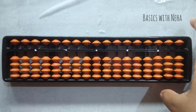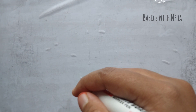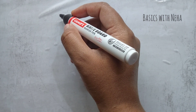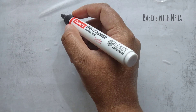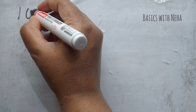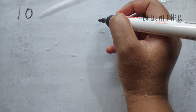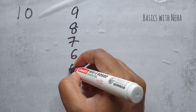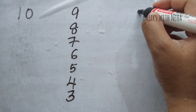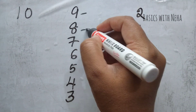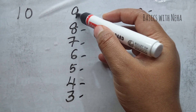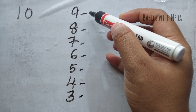Now let's go to the formulas set-wise. We have three sets: big friends, small friends, and combination. In the first set, we'll see the positive components. We should know who is called the big friend — the big friend is 10. We should know the big friends of all the numbers: for 9, it is 1; for 8, it is 2; for 7, it is 3; for 6, it is 4; for 5, it is 5; for 4, it is 6; for 3, it is 7; for 2, it is 8; and for 1, it is 9.